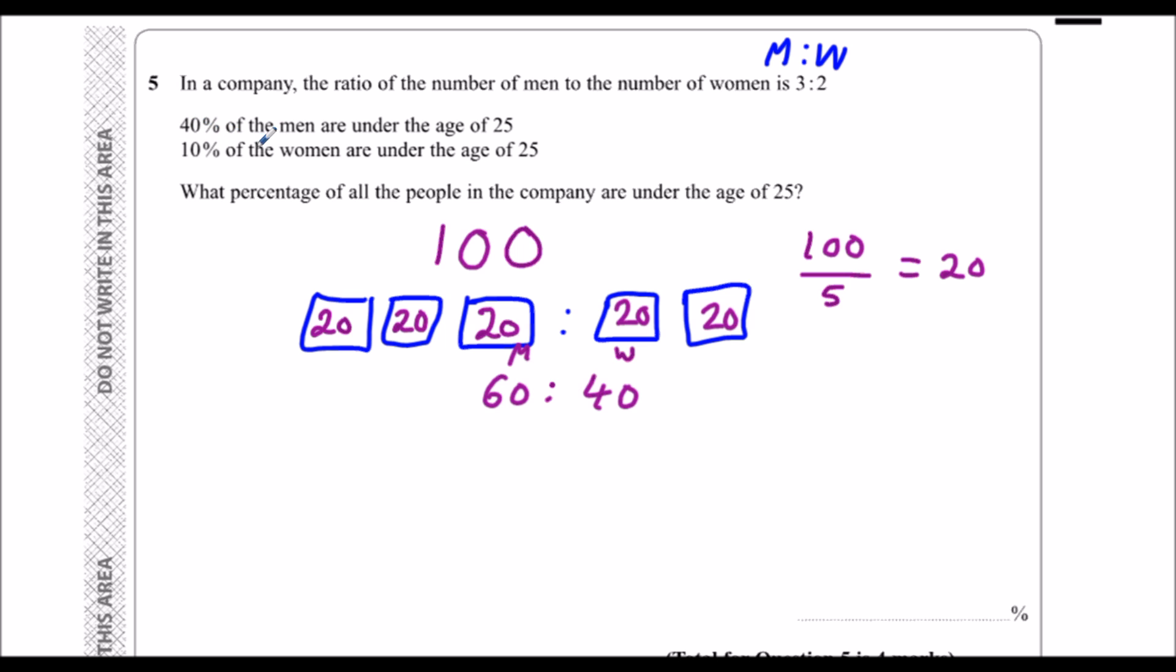40% of the men are under 25. So I need to work out 40% of 60. So if I do 60 divided by 10, that's 6. So 10% is 6. And I want 40%, so I'm going to times 4. 6 times 4 is 24.